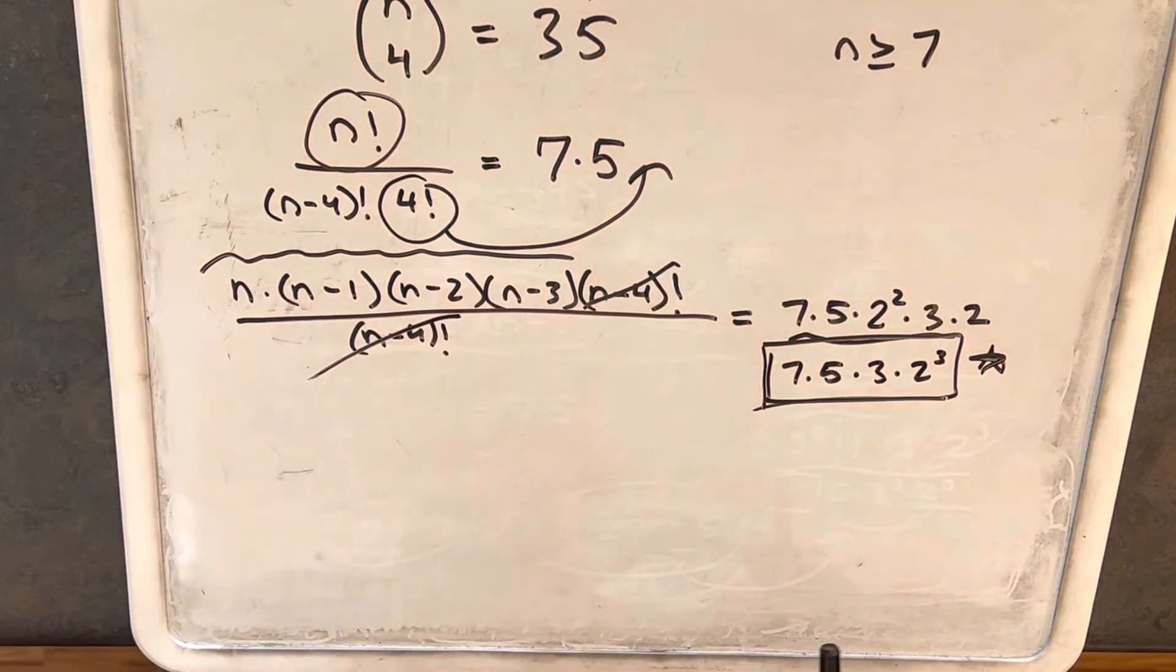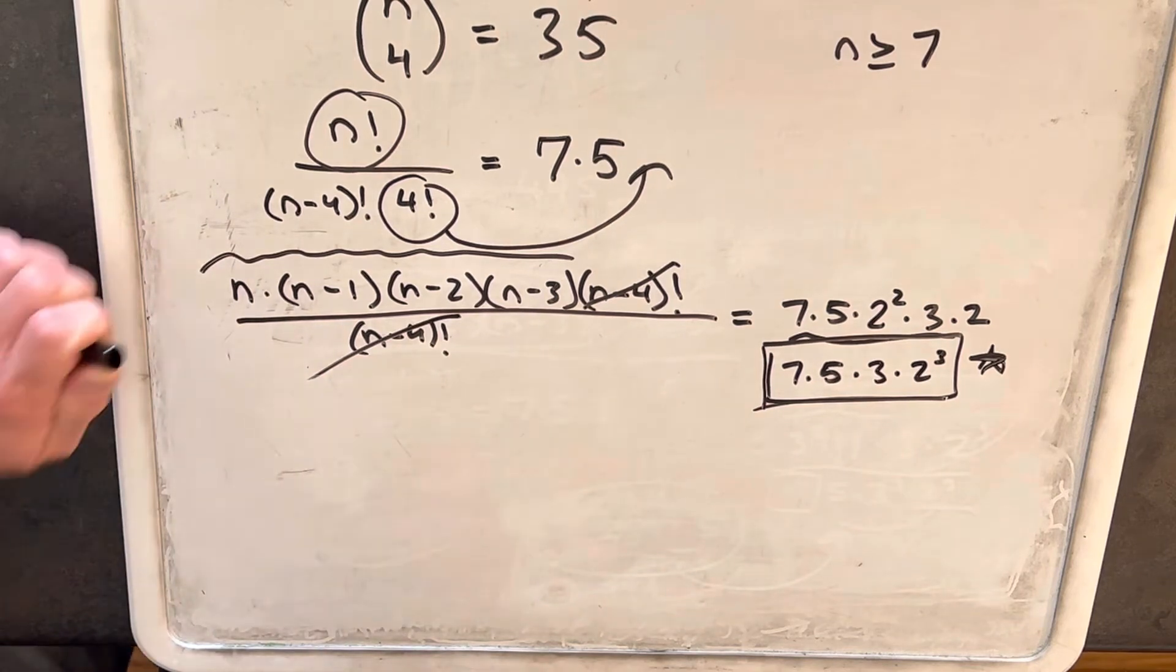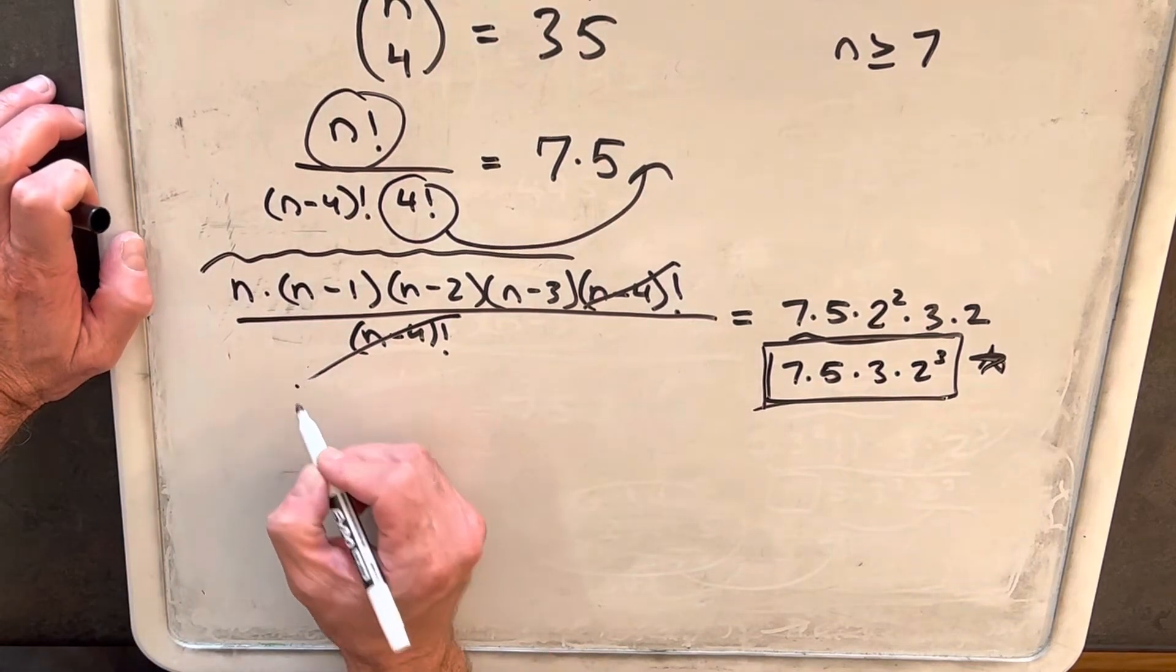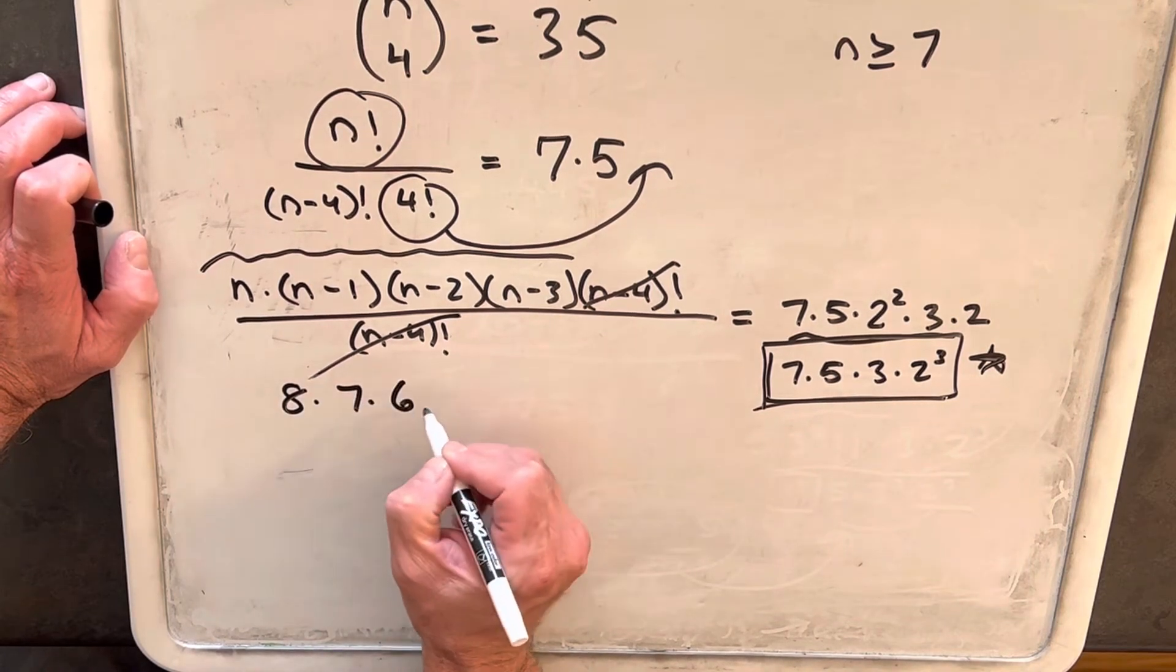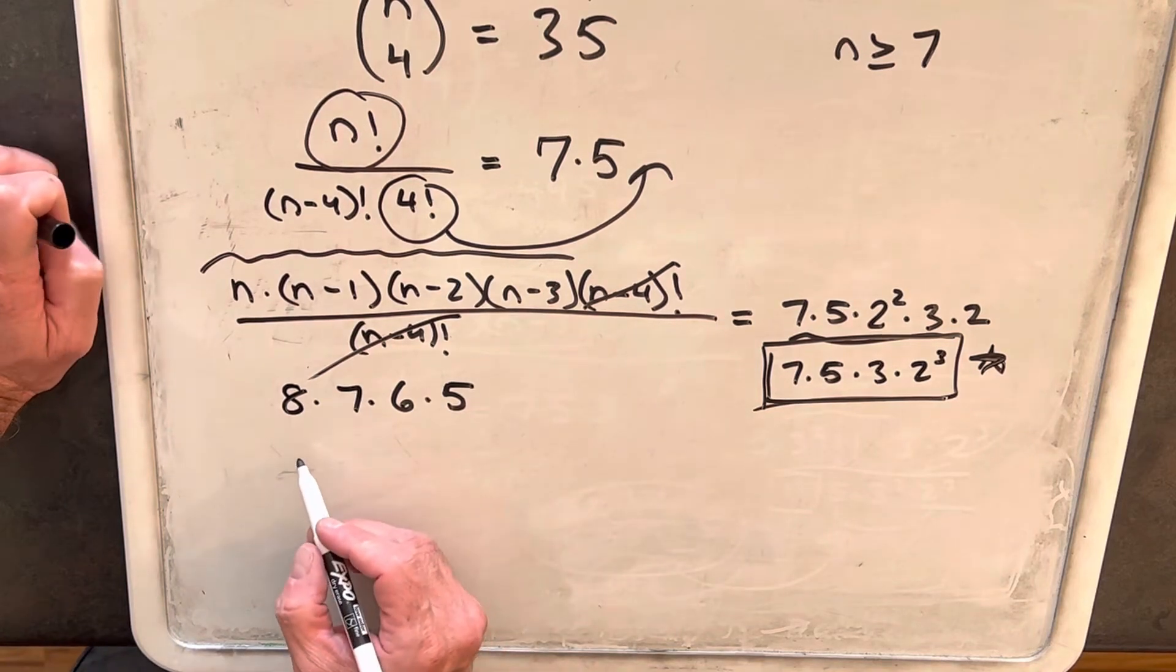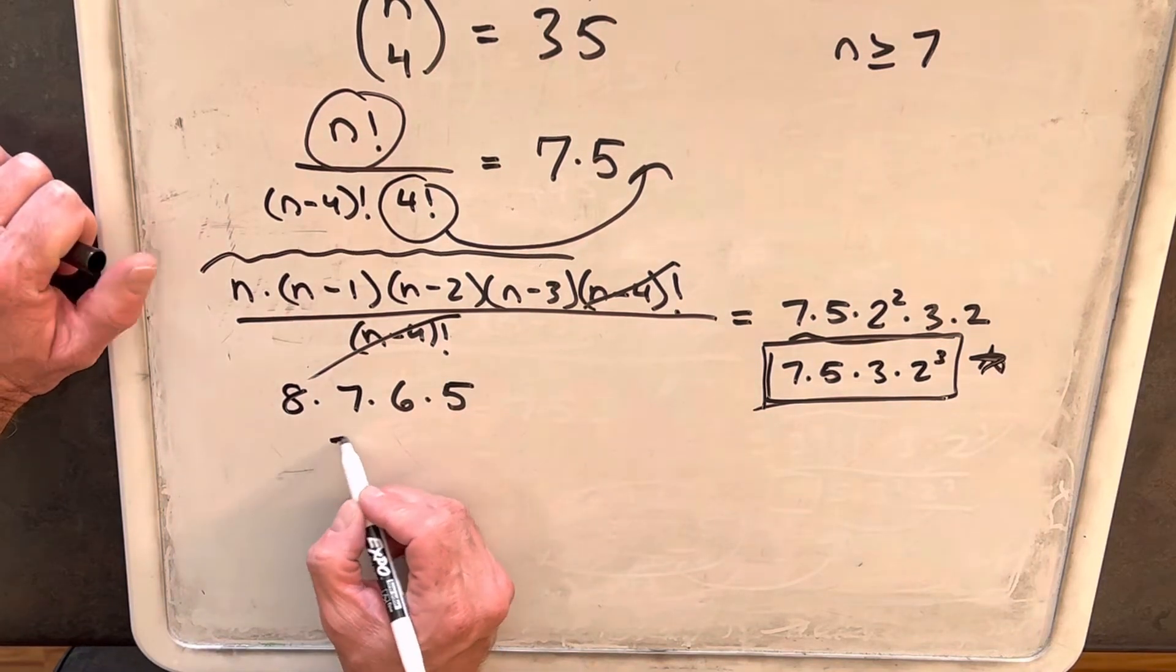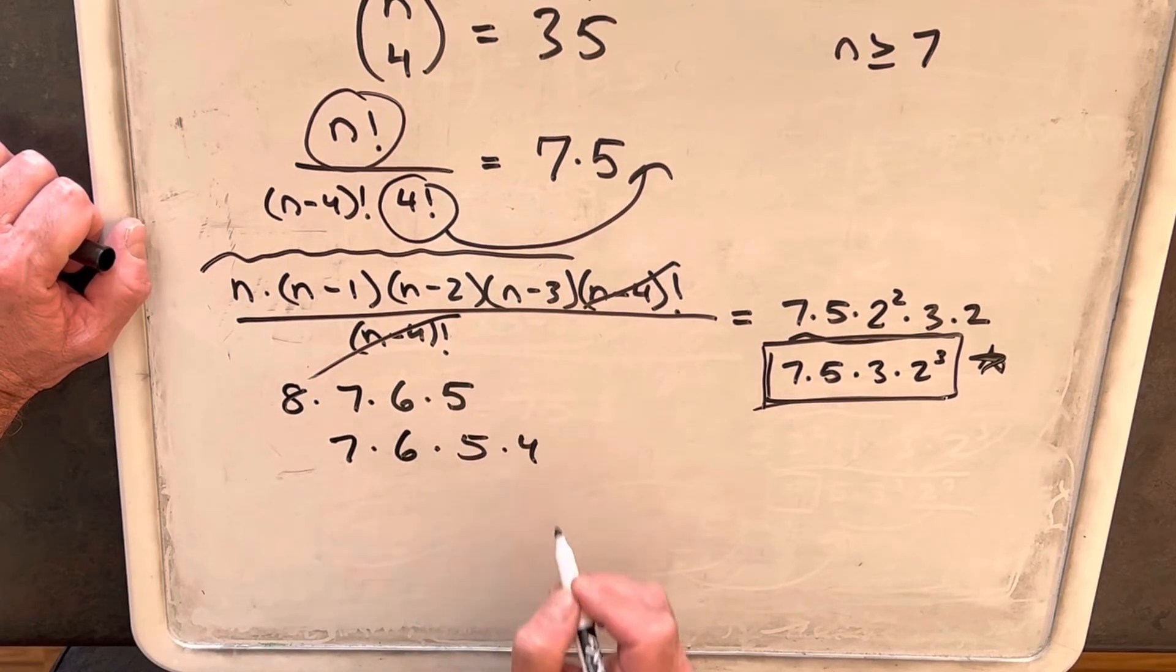So based on this prime factorization, we know that we need a 7 and a 5. We have 4 consecutive integers. We know we need a 7 and a 5. So there's two different ways we could write this. We could guess that it's going to be 8 times 7 times 6 times 5, or it could be 7 times 6 times 5 times 4.